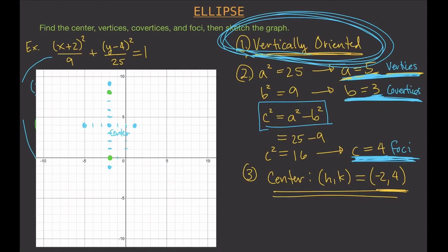The last thing to do is connect the dots and draw our ellipse. Tracing through the plotted points, we now have our ellipse sketched on the graph.